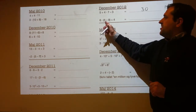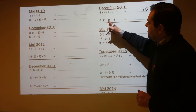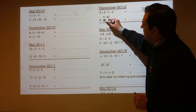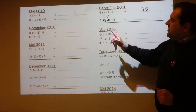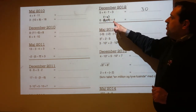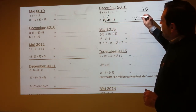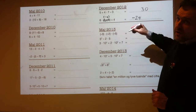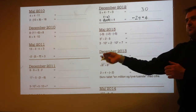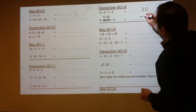6 times (5 minus 9) plus 4. Do the brackets first: 5 minus 9 is minus 4. So that's the same as 6 times minus 4 plus 4. 6 times minus 4 is minus 24. Then minus 24 plus 4 makes minus 20.